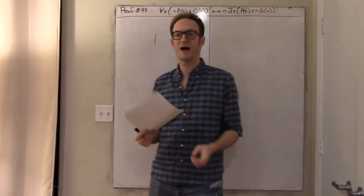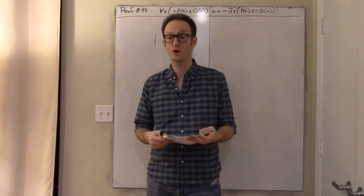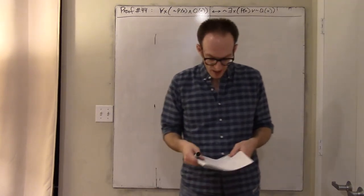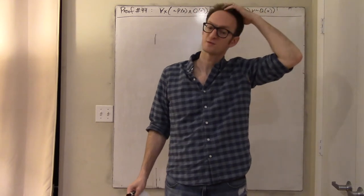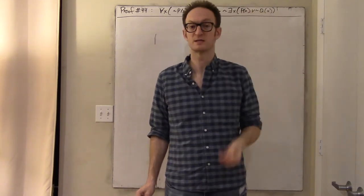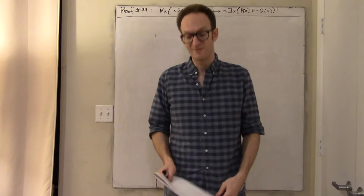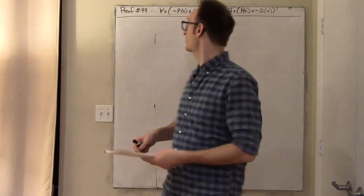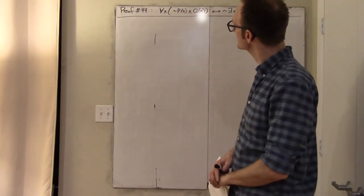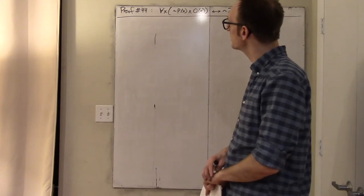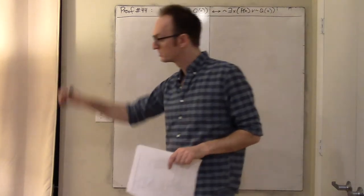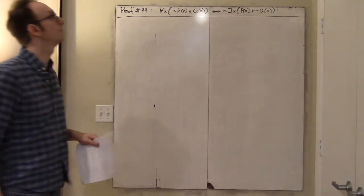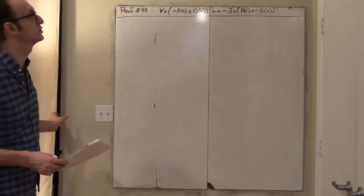We're going to continue by doing proofs 44 and 45. Proofs 42 and 43 were the DeMorgan's Laws for the quantifiers, which contain the deep understanding of everything that's going on. Proof 44 is just practice — an extra, kind of annoying problem with some extra material thrown in to give you more experience doing this yourself.